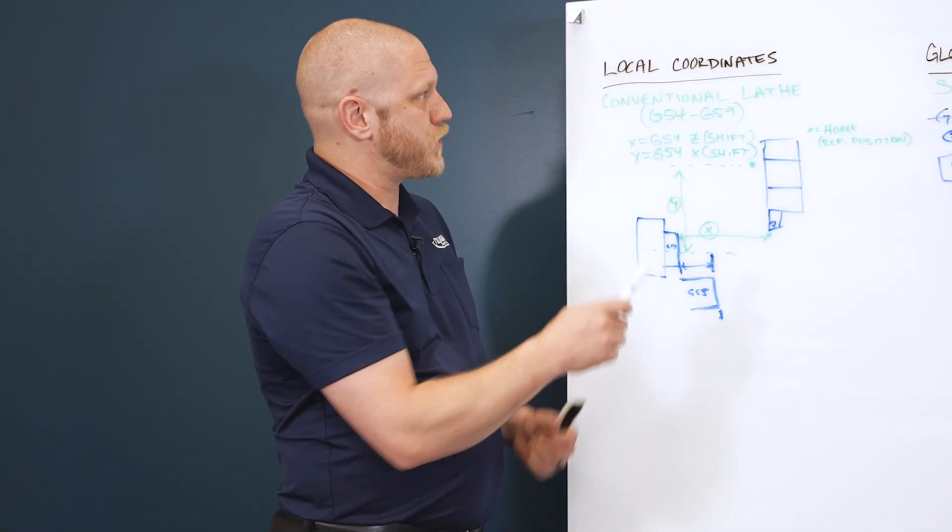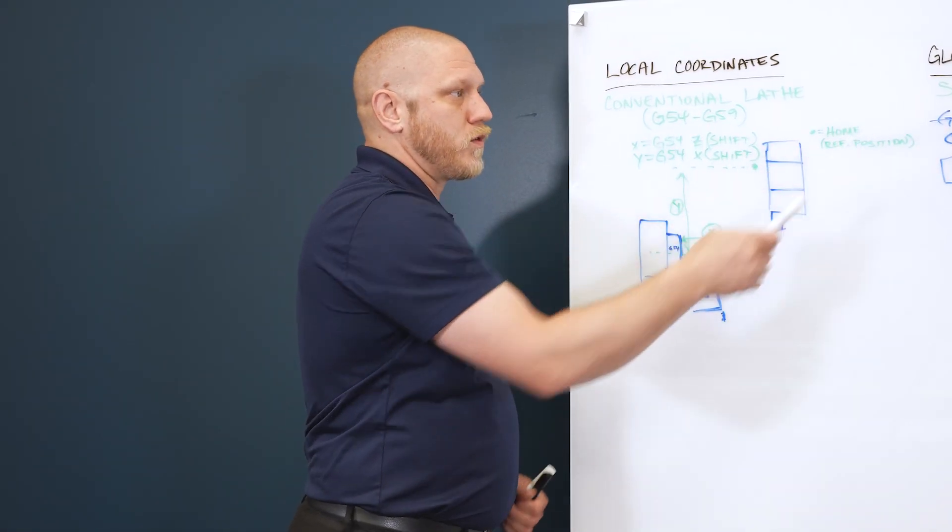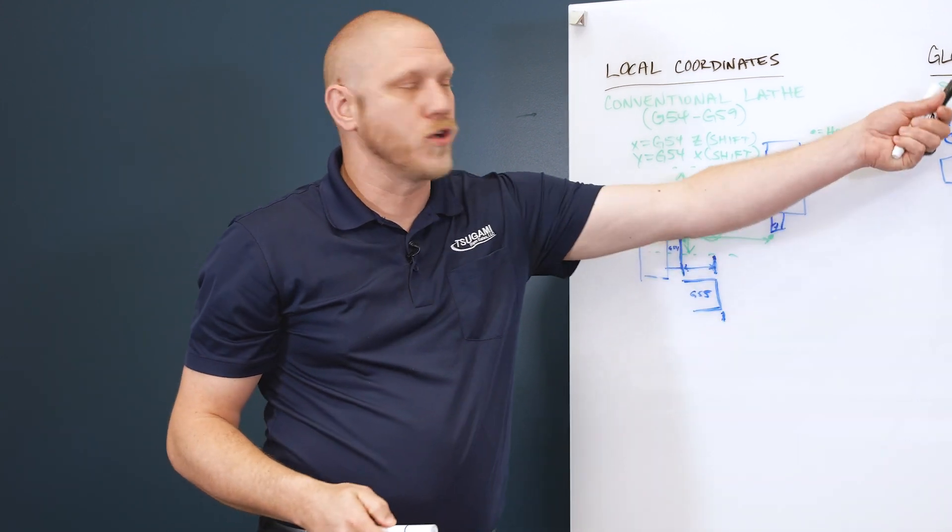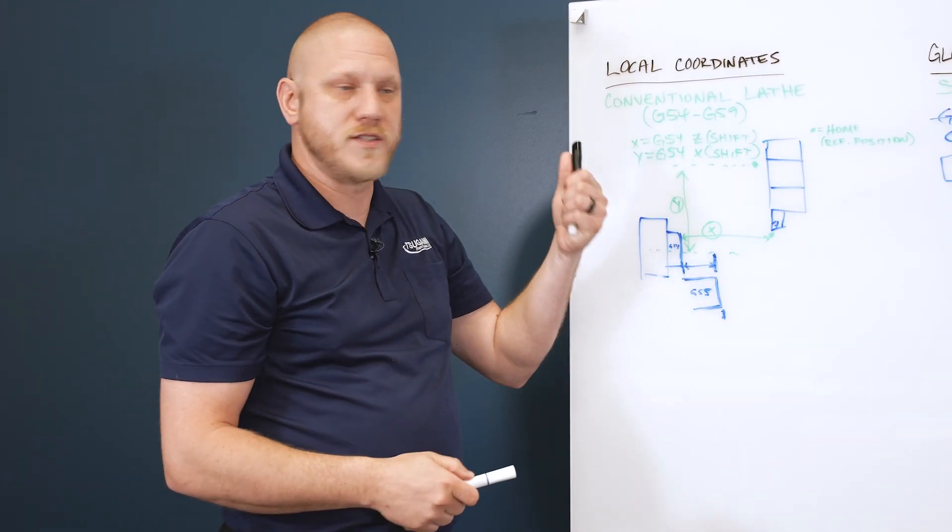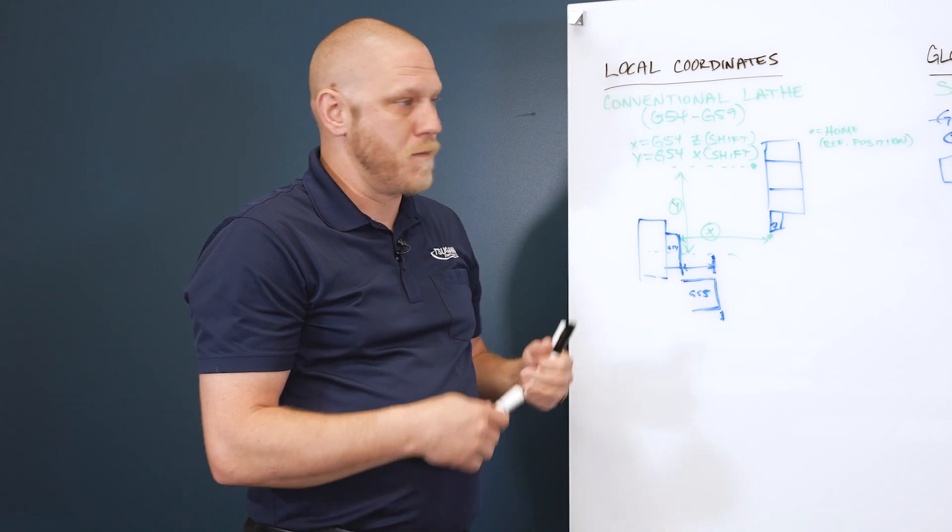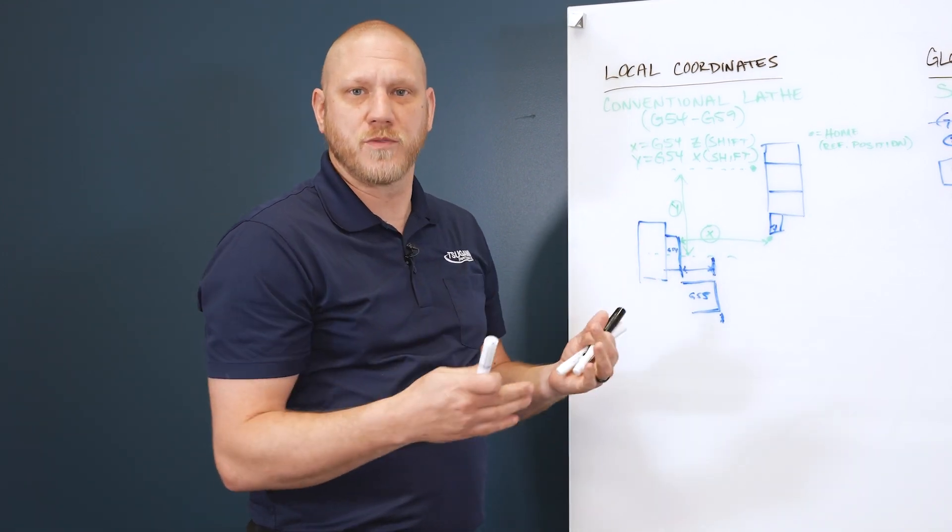So that's really the difference between local coordinates and global coordinates. Swiss machines typically use the global coordinate system, whereas your conventional lathe is going to use a local coordinate system. Both work just fine, just a little bit different animal.